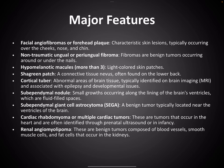Major features include: facial angiofibromas or forehead plaques, non-traumatic ungual or periungual fibromas, hypomelanotic macules, shagreen patch, cortical tuber, subependymal nodule, subependymal giant cell astrocytoma (SEGA), cardiac rhabdomyoma, and renal angiomyolipoma.